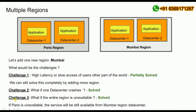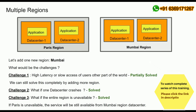For challenge three: if the Paris region entirely goes down, the application would still be available and serving requests from the Mumbai region. Though there may be higher latency, the application will not go down. This is the importance of regions — deploying your application at different regions ensures availability even when an entire region becomes unavailable.